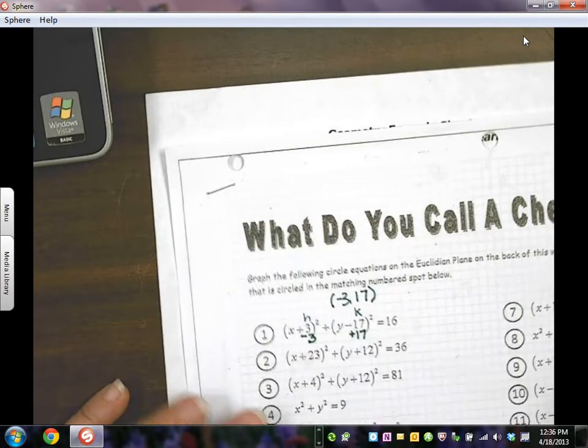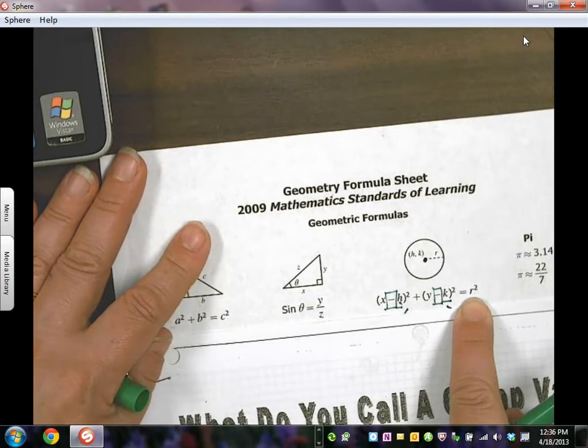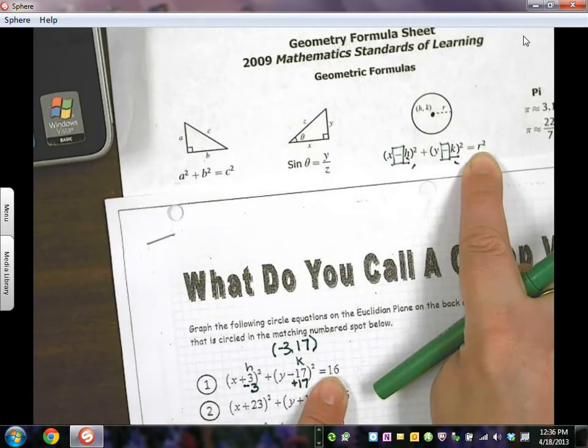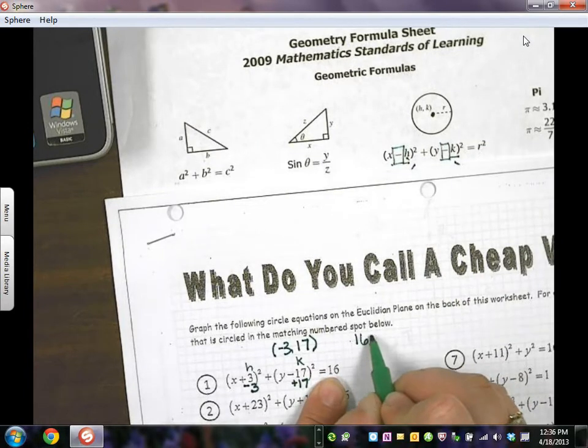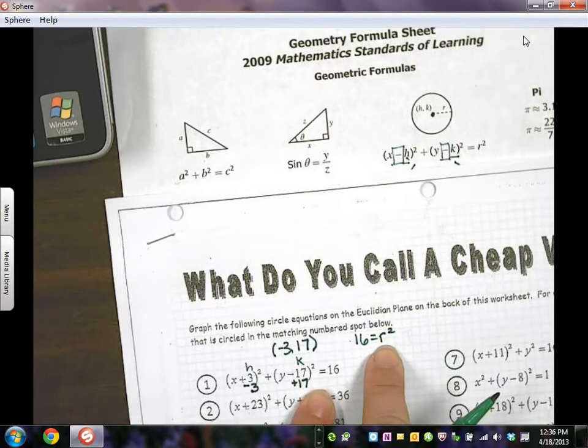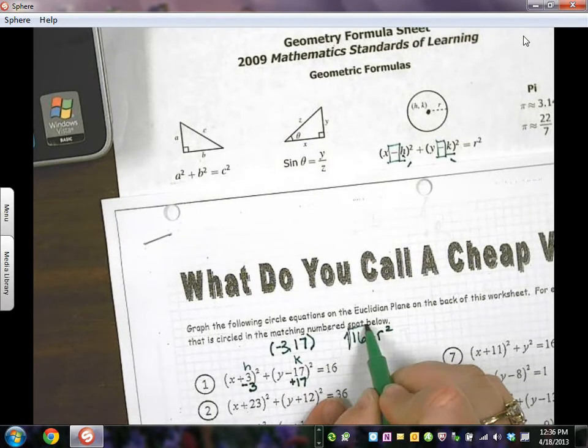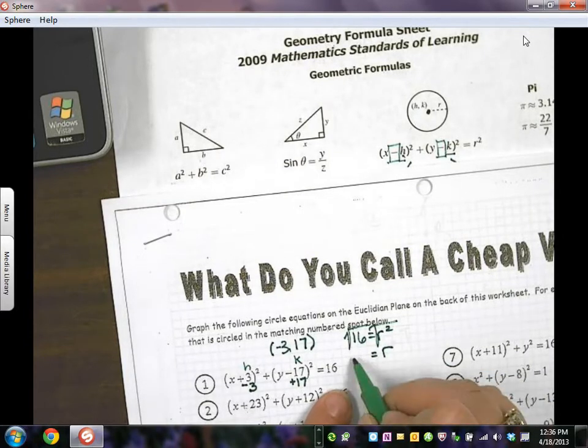Now when we look back at our formula, we notice that R squared is on the end. So this 16 is my R squared. I'll remind myself that whatever that is equals R squared, so I have to take the square root of it to find out what R is. And in this situation, R or my radius is 4.